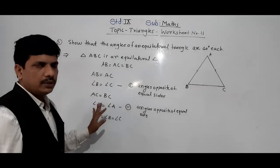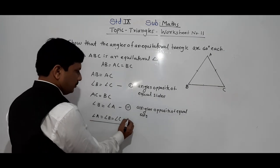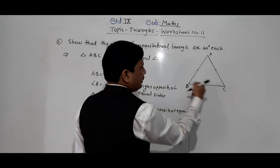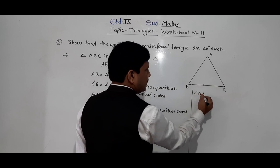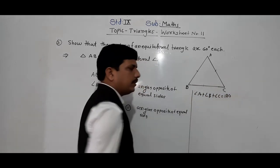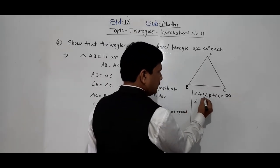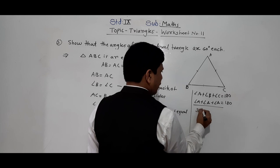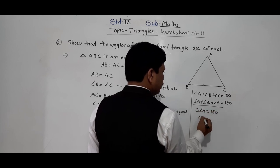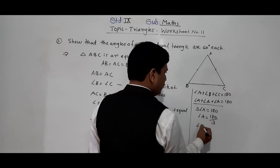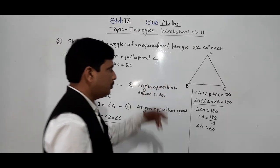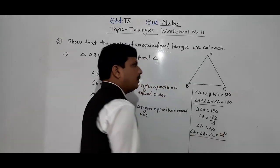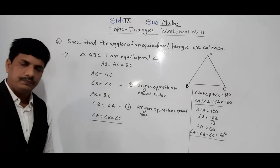Using the angle sum property, angle A plus angle B plus angle C equals 180 degrees. Since all three angles are equal, we can write angle A plus angle A plus angle A equals 180 degrees, so 3 times angle A equals 180 degrees, giving angle A equals 60 degrees. Therefore angle A equals angle B equals angle C equals 60 degrees — each angle of an equilateral triangle is 60 degrees.